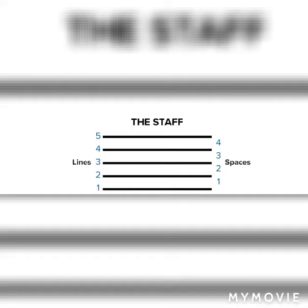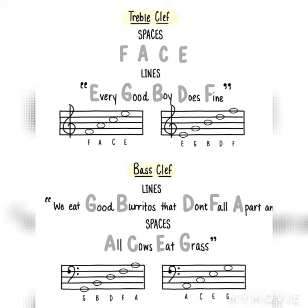What's up y'all, it's your boy Drum Killer, and today we'll be talking about the staff. Treble clef spaces is F-A-C-E, and the lines are E-G-B-D-F. For bass clef, the lines are G-B-D-F-A, and the spaces are A-C-E-G. What I use to remember treble clef spaces is F-A-C-E, and what I use to remember the lines is 'Every Good Boy Does Fine.'